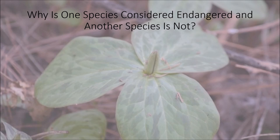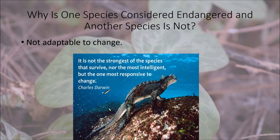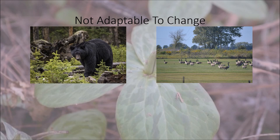Now we're going to talk about why an organism is considered endangered. Why is one species considered endangered and another is not? One big reason is they are not adaptable to change. Charles Darwin once said that it is not the strongest of the species that survive, nor the most intelligent, but the one most responsive to change. We have a black bear, which is starting to increase in Ohio, and Canada geese, which are very common in the state.